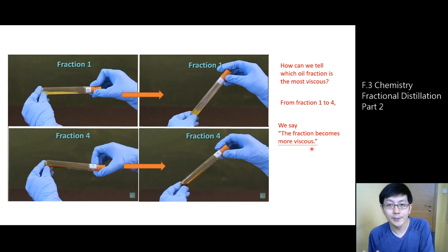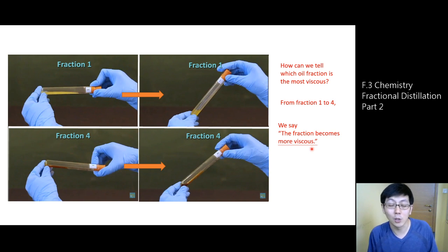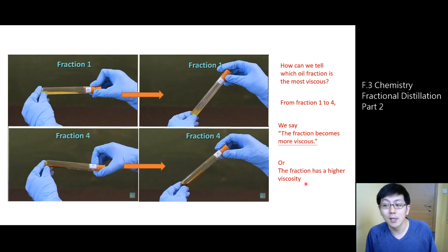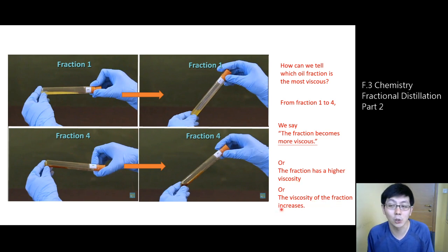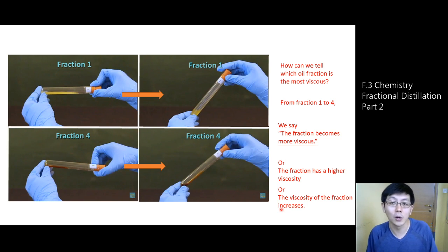We can describe this with the term viscosity. From fraction 1 to fraction 4, the fraction has higher viscosity — or we say the viscosity of the fraction increases. This is property number two we compare among these oil fractions.